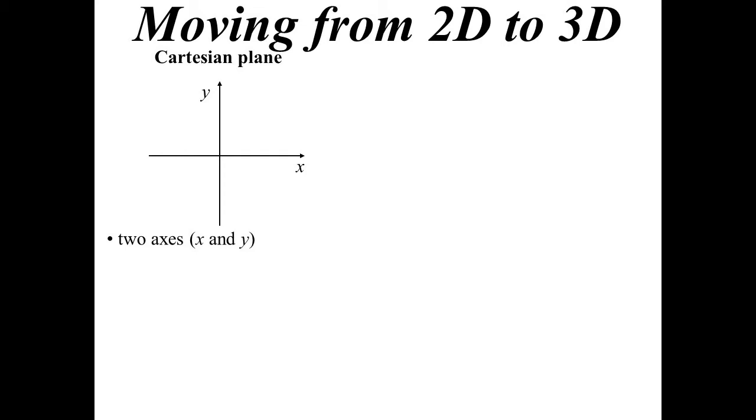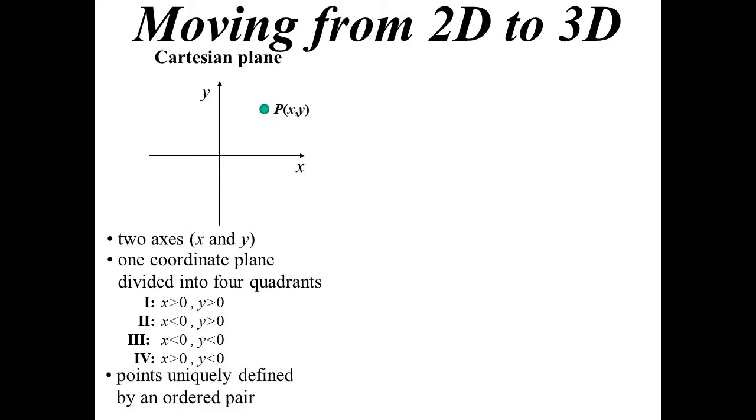So it has two axes, x and y, it has one coordinate plane, and that is divided into four quadrants. The first quadrant is where they're both positive, and then we go around in an anti-clockwise manner naming the four quadrants. A particular point is uniquely defined by an ordered pair - it has an x value and a y value.